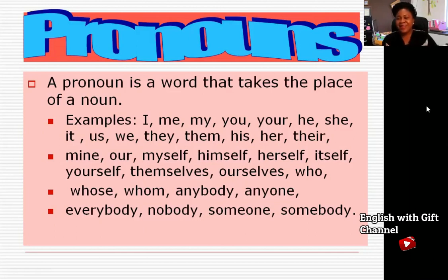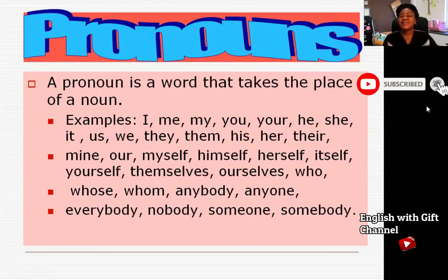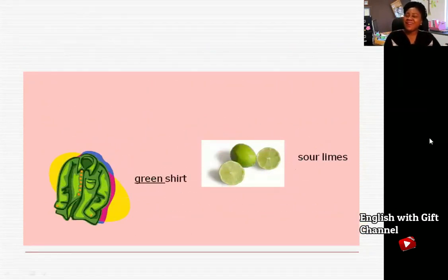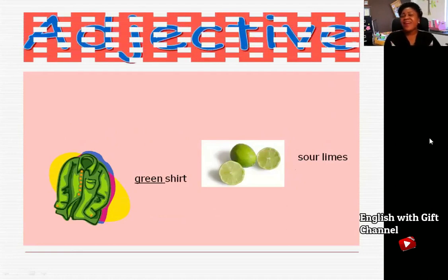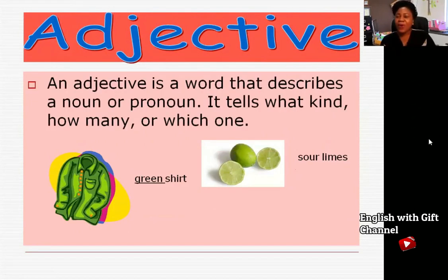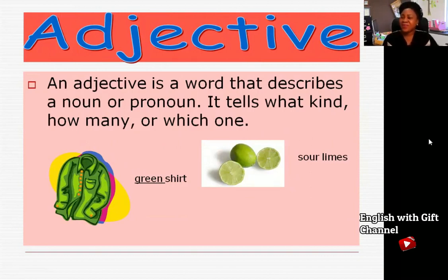The next part of speech is also related to nouns and pronouns — and that is adjectives. Adjectives are words that give information about the noun or pronoun in a sentence. An adjective is a word that describes a noun or a pronoun.